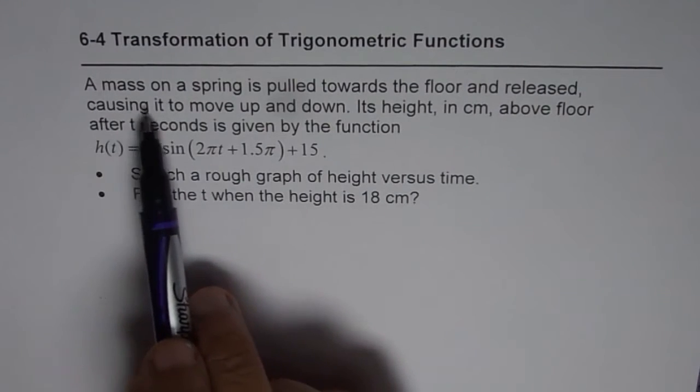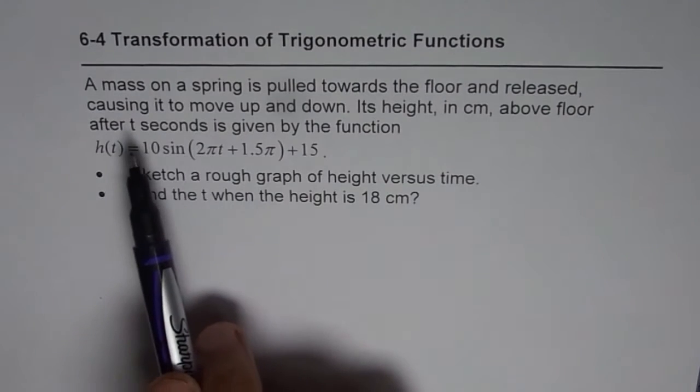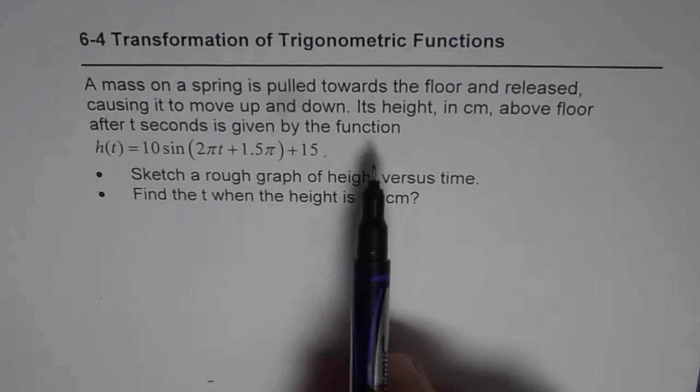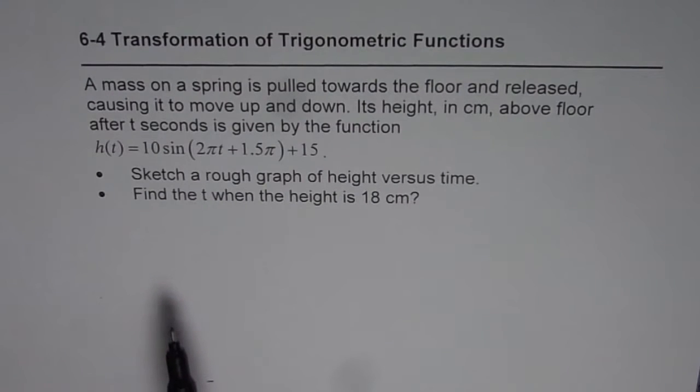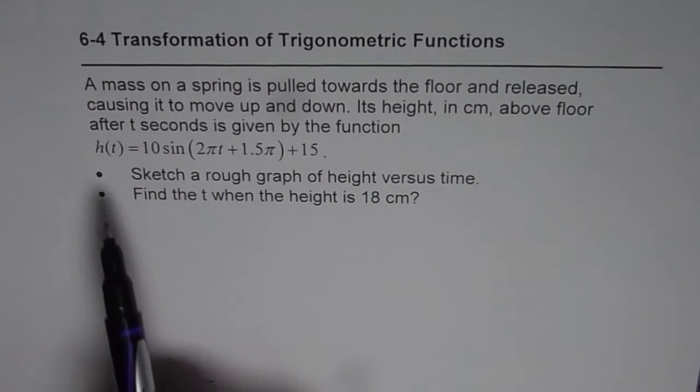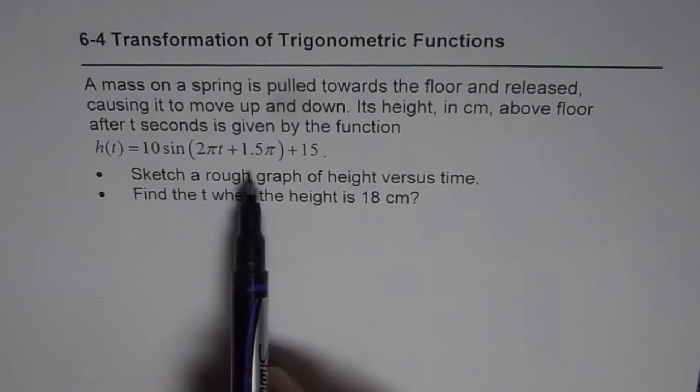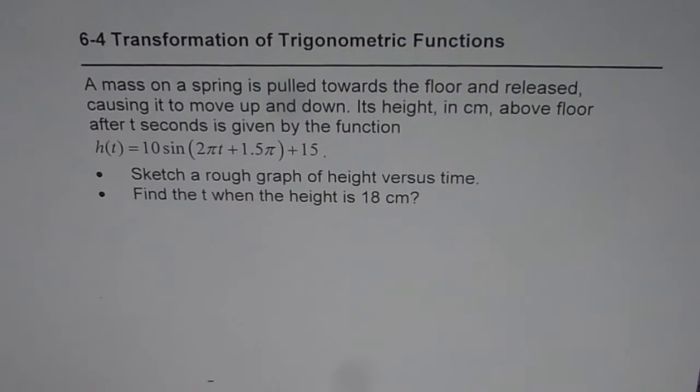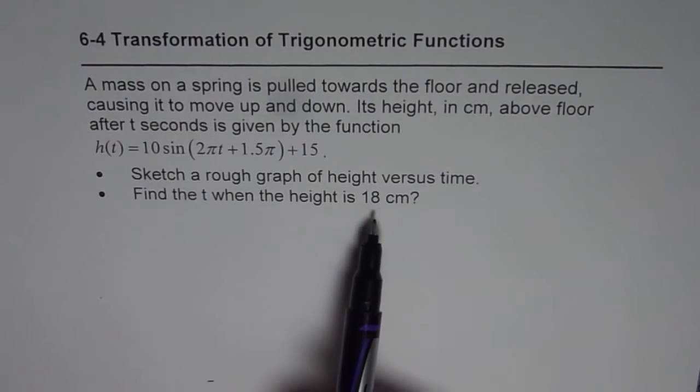The question here is: a mass on a spring is pulled towards the floor and released, causing it to move up and down. Its height in centimeters above floor after t seconds is given by the function h(t) = 10sin(2πt + 1.5π) + 15. Sketch a rough graph of height versus time, and find the time t when height is 18 centimeters.